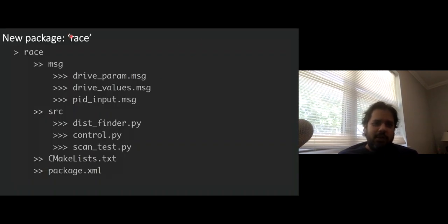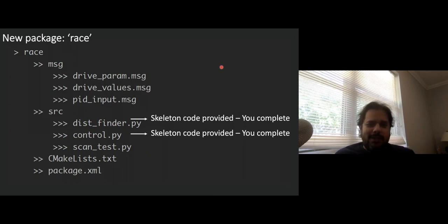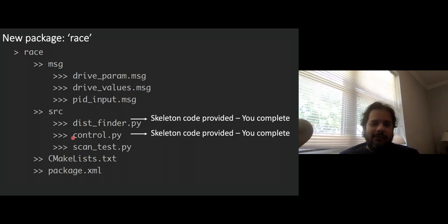Here are the contents of the new package: there is a message subdirectory containing definitions of some custom messages I'll explain shortly. The main parts of the package are two files — first is called distance_finder.py and the other is control.py. Both of these are templates you have to complete. You are free to start from scratch, but these templates are a guideline rather than a restriction. Additionally, I committed a simple subscriber to the scan messages — just for reference to help you write such a subscriber.